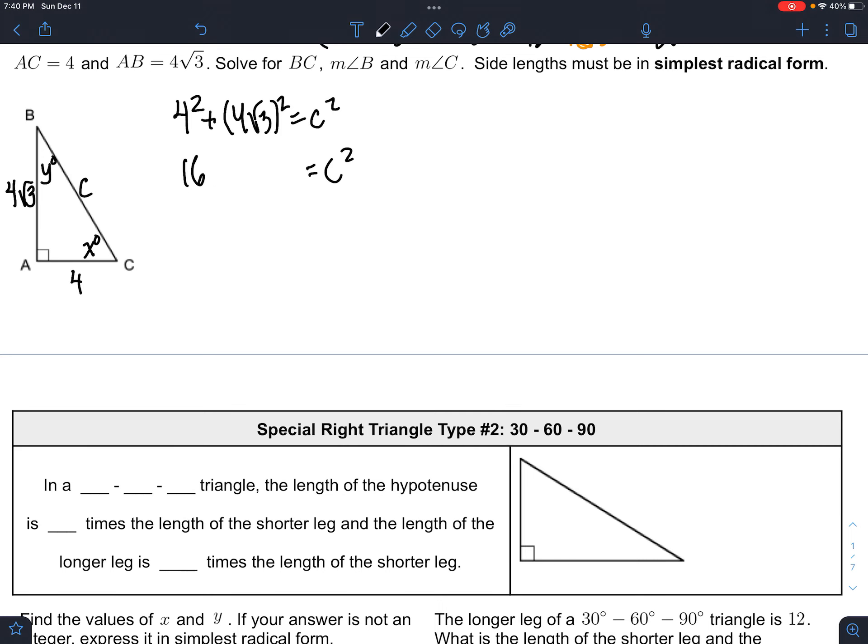This is 16, C squared. And 4 square root 3 times 4 square root 3 is also 4 times 4 and square root 3 times square root 3. That's because with multiplication it doesn't matter the order that you multiply stuff. So this is actually 16 times 3, which is 48, which makes this a perfect square of 64. So C is 8. Works out really nice. Special, if you would say.